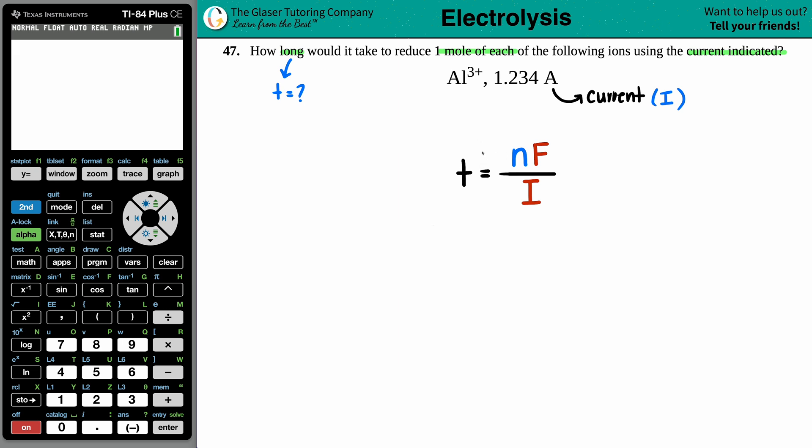Now in this case, I just reorganized this formula just to fit t equals, because that's what we're solving for. But you can basically solve for any of the other three variables. Technically, you should solve for two of them, because the Faraday's constant is a constant number.